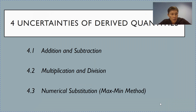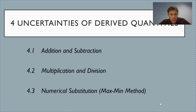Hello everyone, we have come to the last section for this topic: Uncertainties of derived quantities. This is where we are going to learn how to estimate the consequential uncertainty for expressions involving addition and subtraction, multiplication and division, and finally, we are going to explore the method of numerical substitution, also known as the maximum-minimum method.